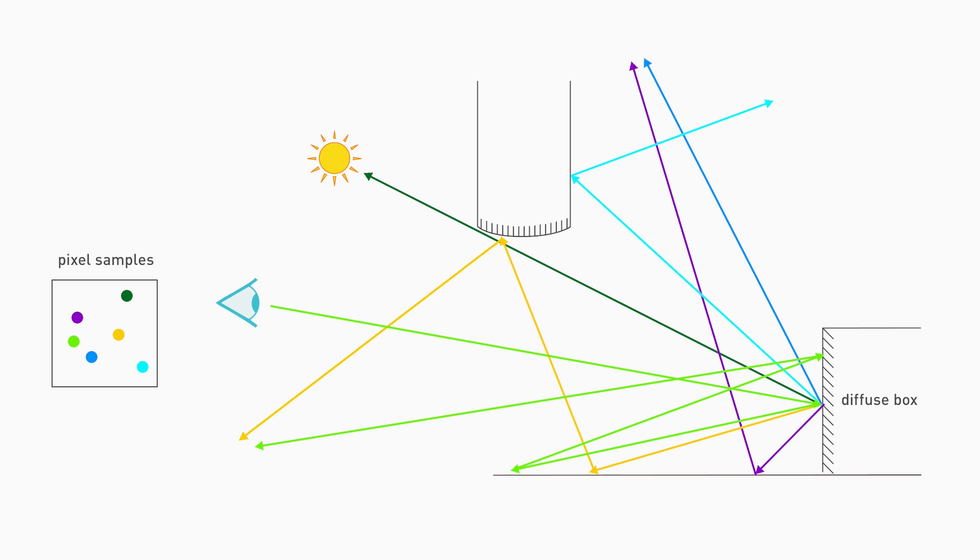In the film industry, for example, you'll often see scenes where they use 1,000 rays, 3,000 rays per pixel. Those take a little while to compute. The point is that by doing this, you will eventually get the right answer.